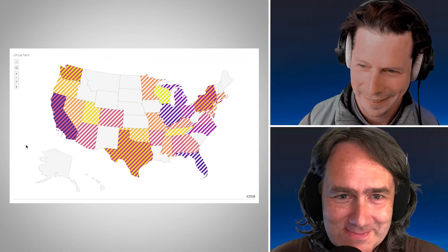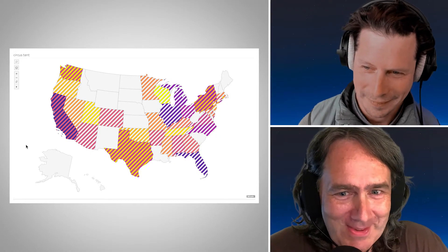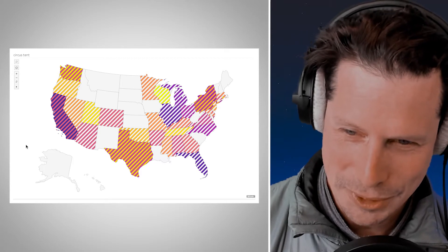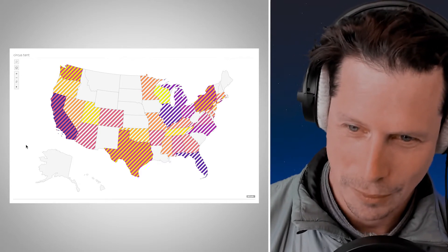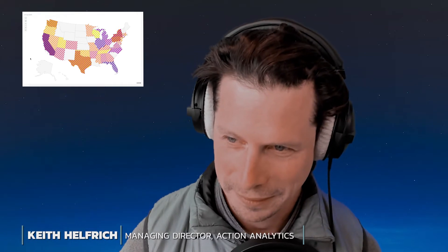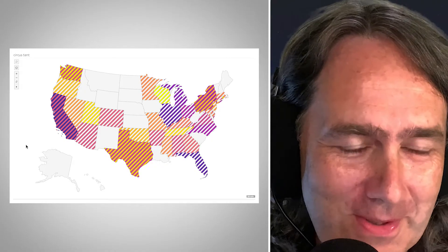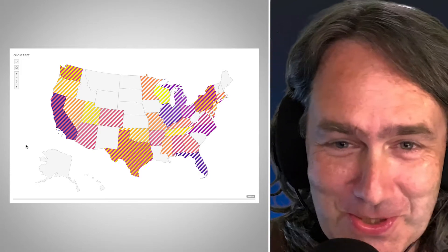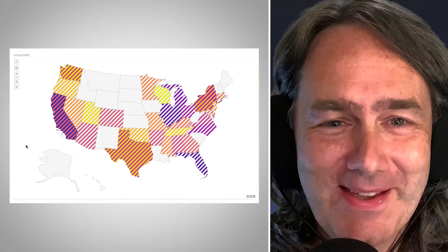Hey Jonathan, hey Keith, what's going on? I've got a fun colorful little thing on striped maps for relationships today. What is that? I can see your screen already. It looks like a pink and purple and yellow zebra with stripes where the orange stripes go across Nevada and California but the blue stripes go across only California. So I call the title of this view 'Circus Tent.'